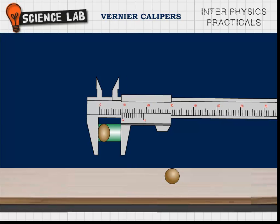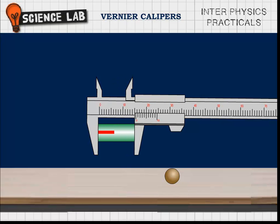The cylinder is then placed diametrically between the jaws and mean diameter D is measured as above. If R is its mean radius, volume of the cylinder V is calculated with the formula V = πR²L centimeter cube.